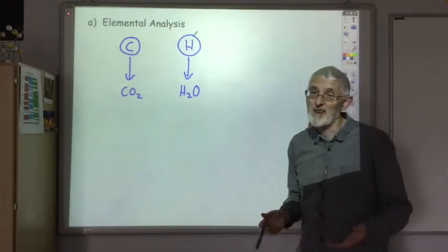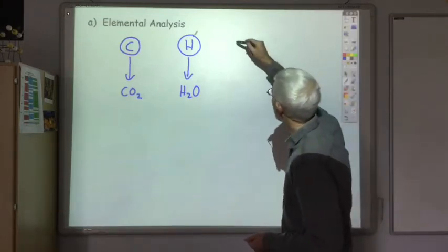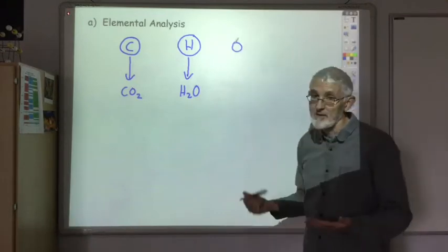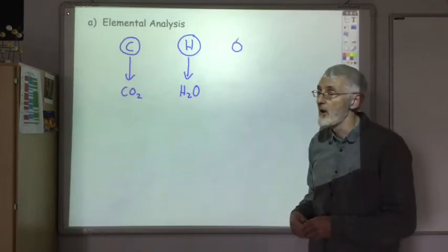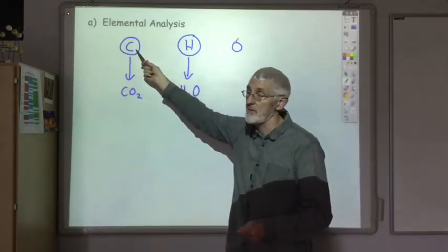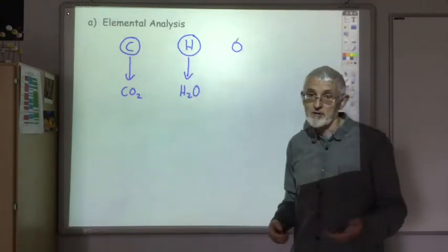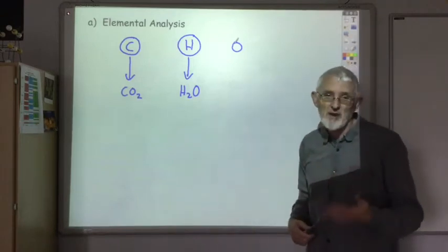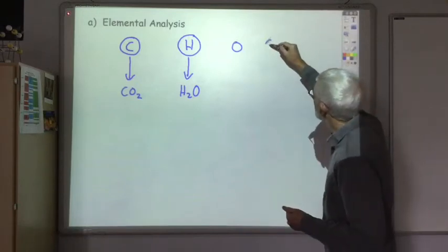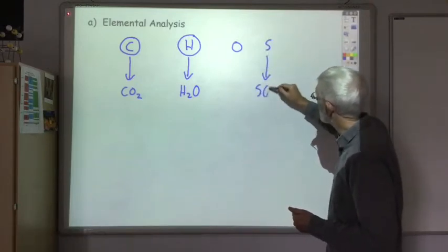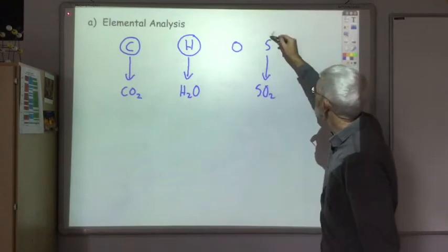For most organic compounds, which tend to be made up of carbon, hydrogen and oxygen, the oxygen we just find out by difference. So if we know we burnt one gram of the sample and found out 0.8 grams of that was carbon and 0.1 grams was hydrogen, then the remaining 0.1 gram must be oxygen. Occasionally you will get other elements in your organic sample — for example, if you had sulfur, you would know because you produce sulfur dioxide gas, and by measuring the volume of sulfur dioxide gas you know how much sulfur is in your sample.